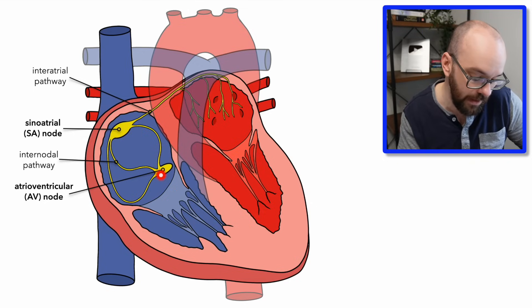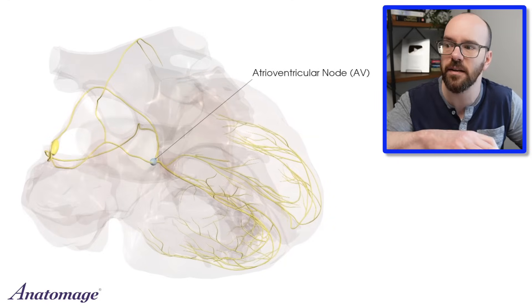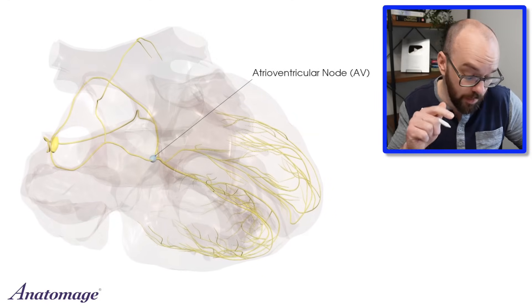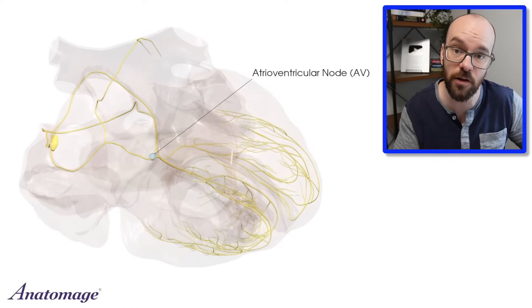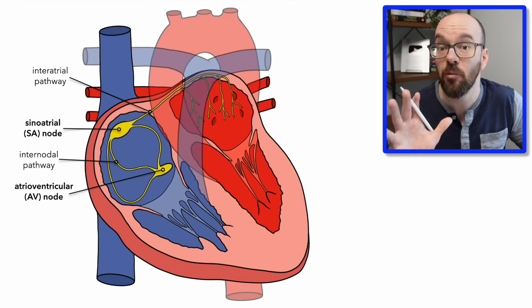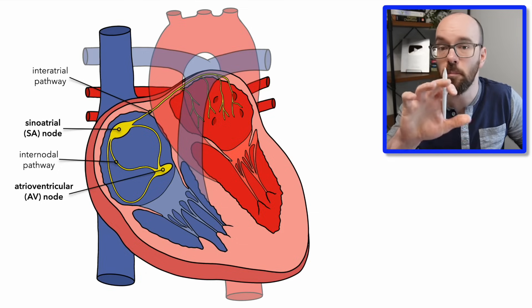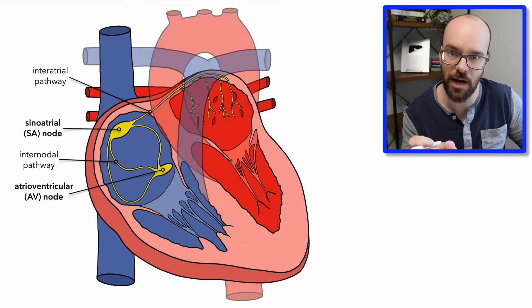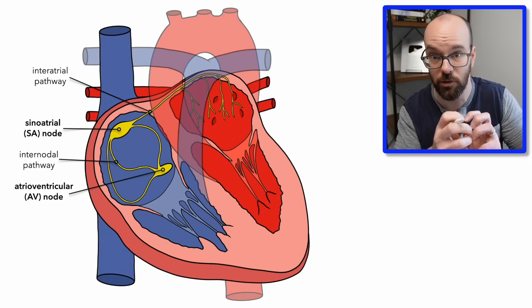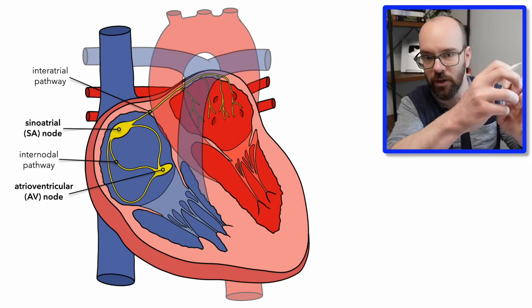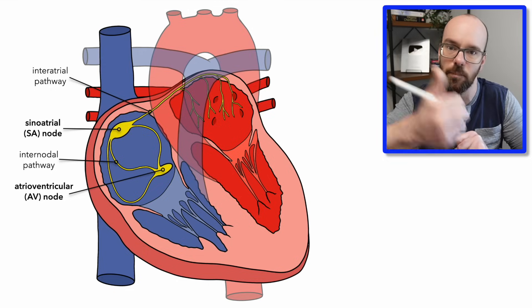The signal then makes it to the AV node. While the cardiac conduction system normally sends signals very quickly, the AV node does the opposite — there's a delay. That delay separates atrial contraction from ventricular contraction, so we can get all the blood from the atria into the ventricles and then the ventricles can pump it all out.